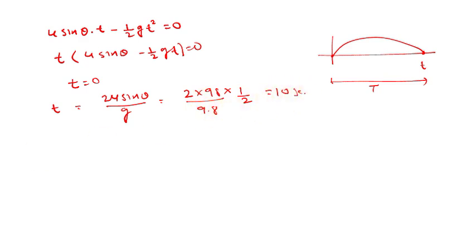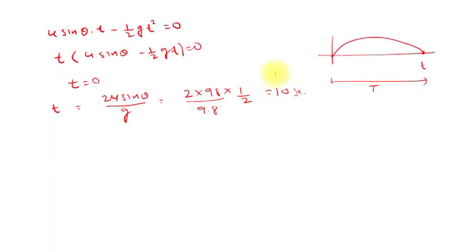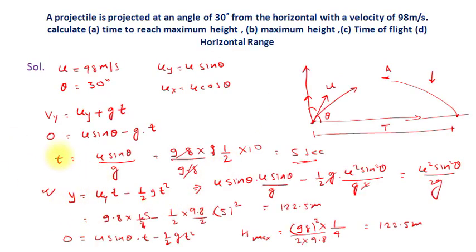Notice that the time to reach maximum height was 5 seconds, and total time of flight is 10 seconds. So time of flight equals twice the time to reach maximum height. From this we can deduce: if T is the time to reach maximum height, then total time of flight = 2T. This gives us another way to find time of flight directly.